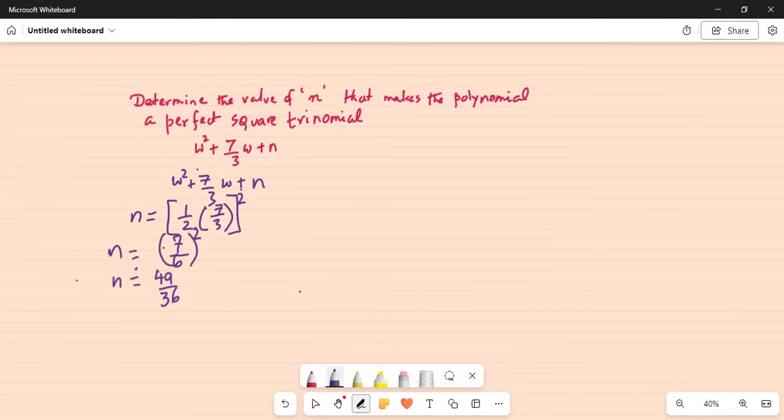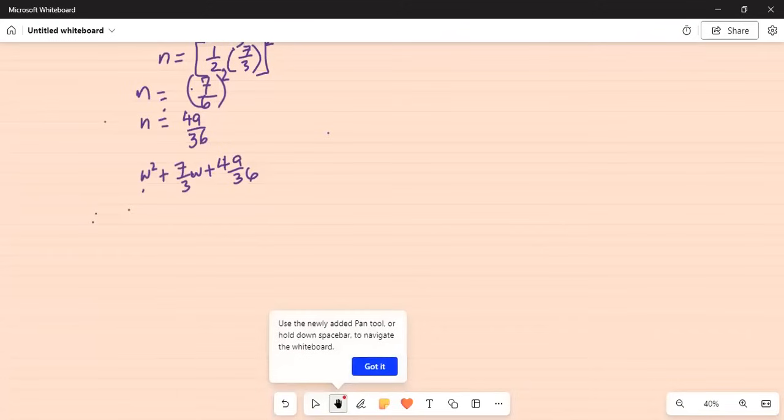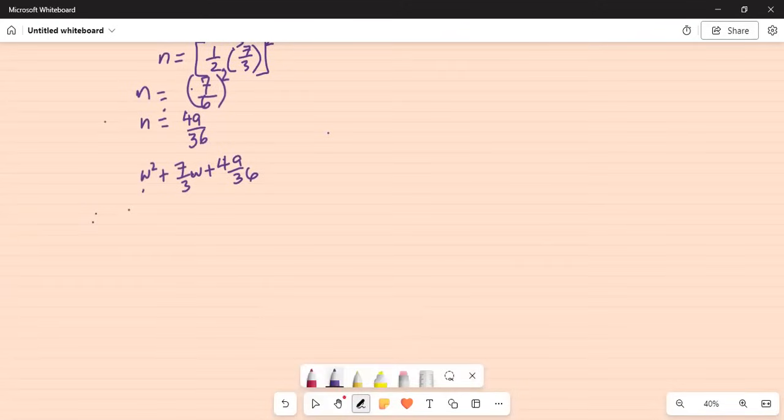So, now the expression becomes, the given expression was w² plus 7/3w, for n I write 49 over 36. So, if I move this a little bit up, this itself can be written as w² plus, if I multiply by 2.